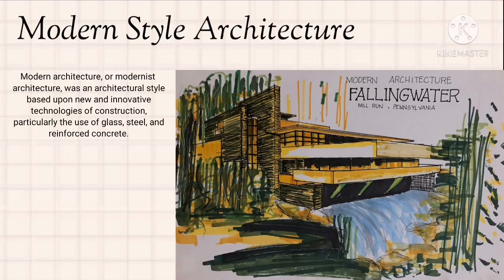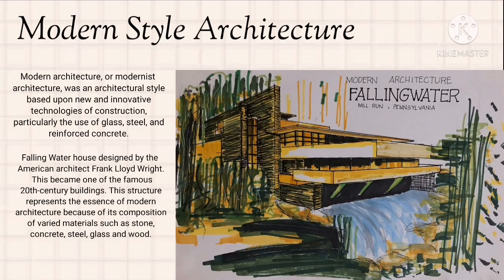Modern architecture, or modernist architecture, was an architectural style based upon new and innovative technologies of construction, particularly the use of glass, steel, and reinforced concrete. Fallingwater house in Laurel Run, Pennsylvania, designed by the American architect Frank Lloyd Wright, became one of the most famous 20th-century buildings. This structure represents the essence of modern architecture because of its composition of varied materials such as stone, concrete, steel, glass, and wood.